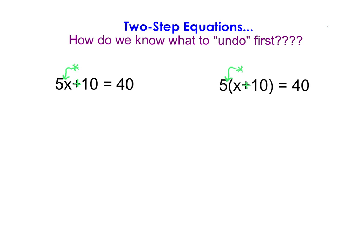In order to successfully do this and get in the habit of knowing what will be undone first, you have to look at your order of operations. In the order of operations, parentheses come first, exponents come second, multiplication and division come together on one level third, and then addition and subtraction come together on one level fourth. Multiplication and division go left to right, and addition and subtraction go left to right.